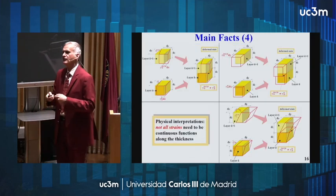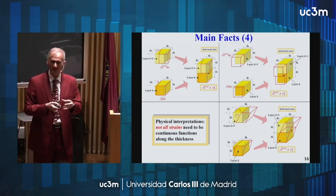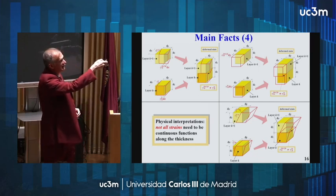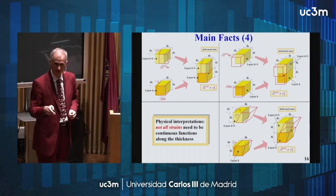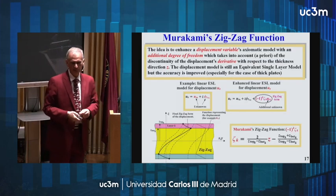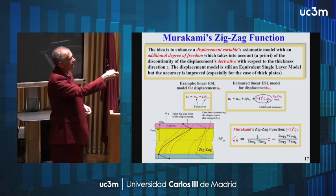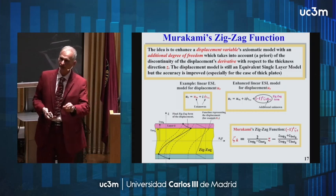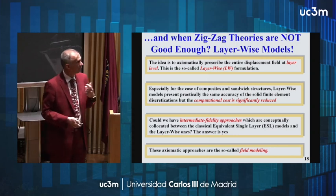You can also demonstrate, using equilibrium equations, that the transverse normal stress — the stress in the z-direction through the thickness — must have a continuous slope. Not only continuity but also continuous slope, coming from the equilibrium conditions. You can also consider what happens at the interface regarding strains: compatibility of displacements implies the in-plane strains must be the same at the interface, but transverse strains can be discontinuous.